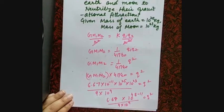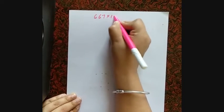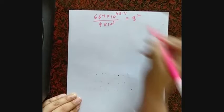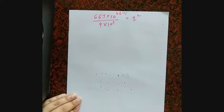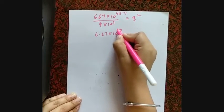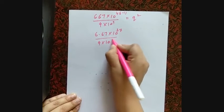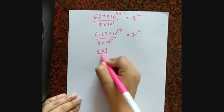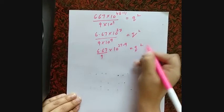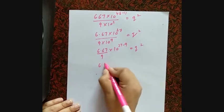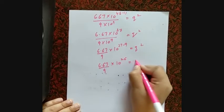Computing the powers: 10⁻¹¹ × 10²⁵ × 10²³ = 10⁴⁸⁻¹¹ = 10³⁷, divided by 10⁹ gives 10²⁸. So Q² = (6.67/9) × 10²⁸. That gives Q² ≈ 0.74 × 10²⁸ = 7.4×10²⁷. Taking the square root gives Q.